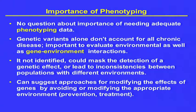There's no question about the importance of needing adequate phenotyping data. Genetic variants alone are not going to account for all chronic diseases. We need to evaluate environmental as well as, most importantly, gene-environment interactions. If they're not identified, it could mask the detection of a genetic effect or lead to inconsistencies between populations with different environments. It also can suggest approaches for modifying the effects of genes by avoiding or modifying the appropriate environment, leading us to issues about prevention and treatment.